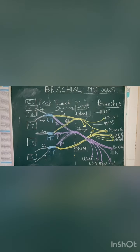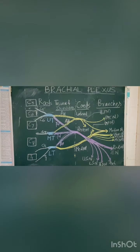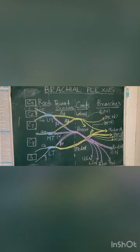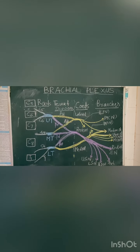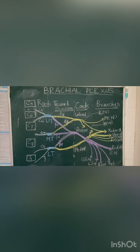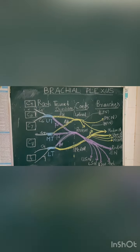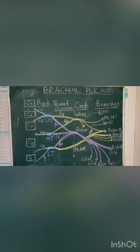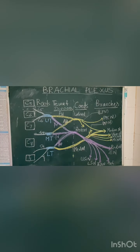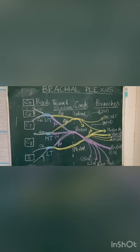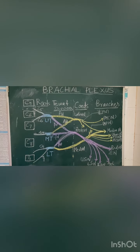There are thirteen branches given by the cords. Three branches are from the lateral cord: the lateral pectoral nerve (LPN), the musculocutaneous nerve (MCN), and the lateral root of the median nerve, which forms the median nerve.